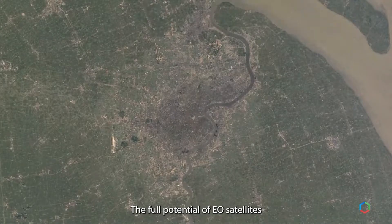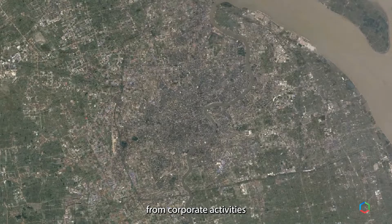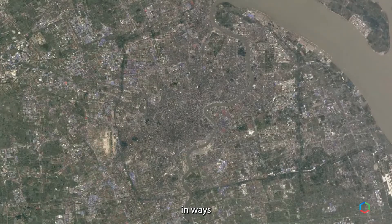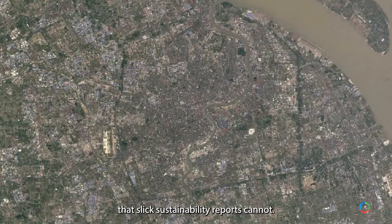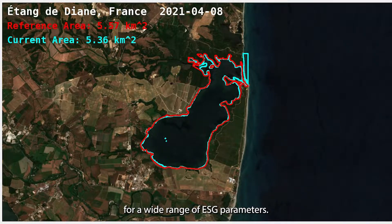The full potential of EO satellites is to monitor changes to land, air and water from corporate activities in ways that slick sustainability reports cannot. This leads us to build data sets for a wide range of ESG parameters.